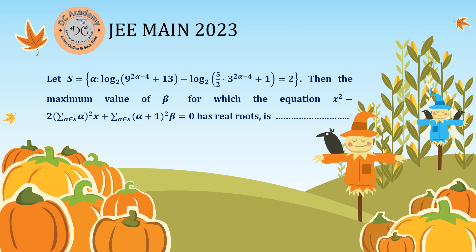In this problem we are going to solve a particular problem which appeared in JEE 2023. It's a very simple problem but it looks like a complicated one. The problem says: S is a set containing alphas satisfying a given logarithmic equation. After finding all those alphas, we have to find the maximum value of beta such that the quadratic equation x squared plus 2 times summation of alpha plus 1 whole square times beta has real roots. To solve this, first we find the possible alphas, then set up the quadratic equation, and then find the condition for real roots.